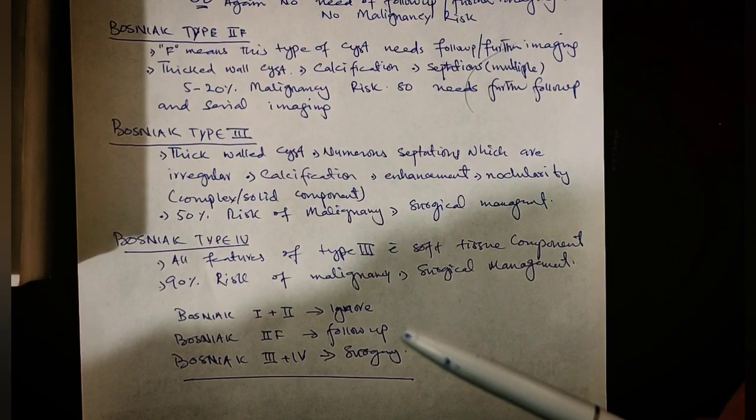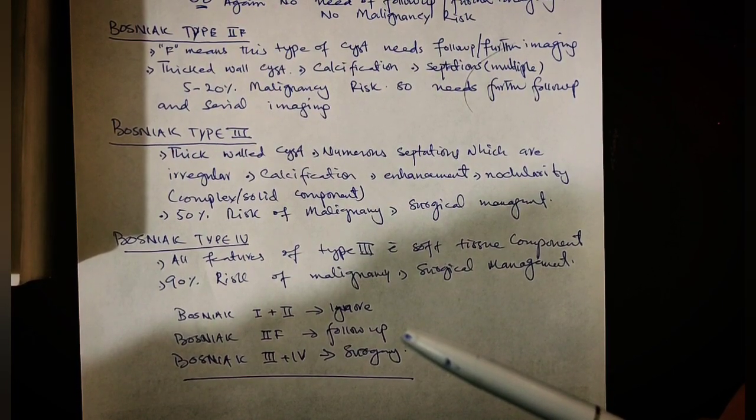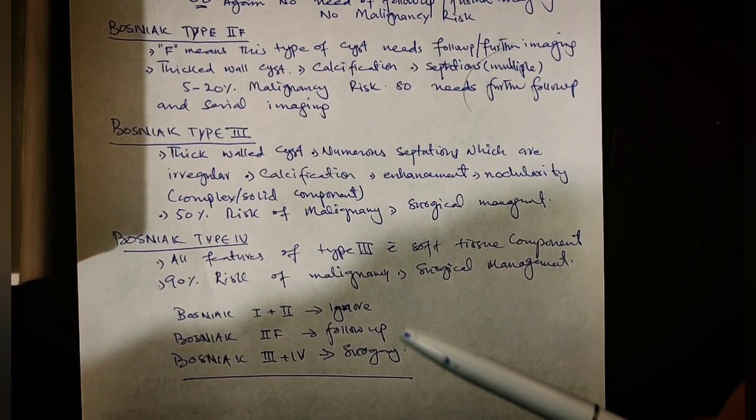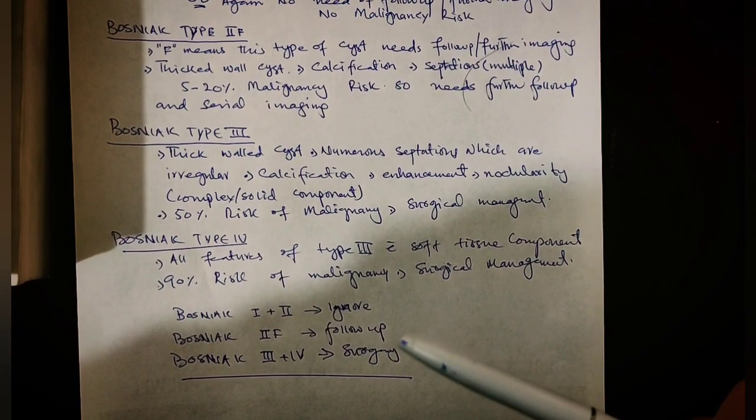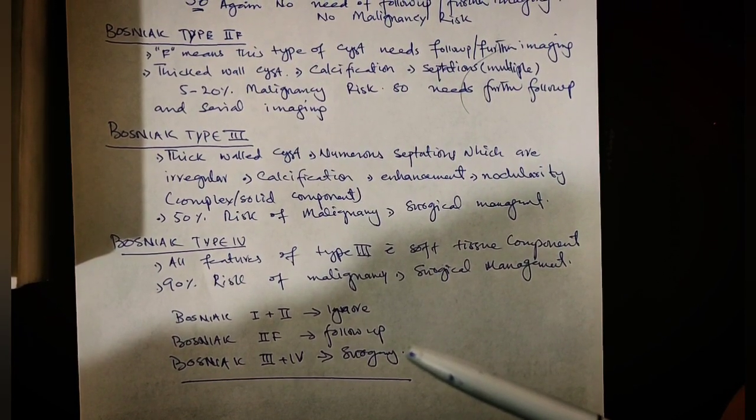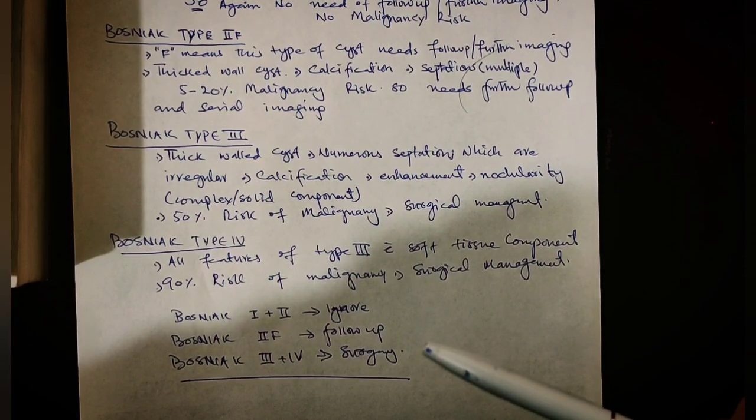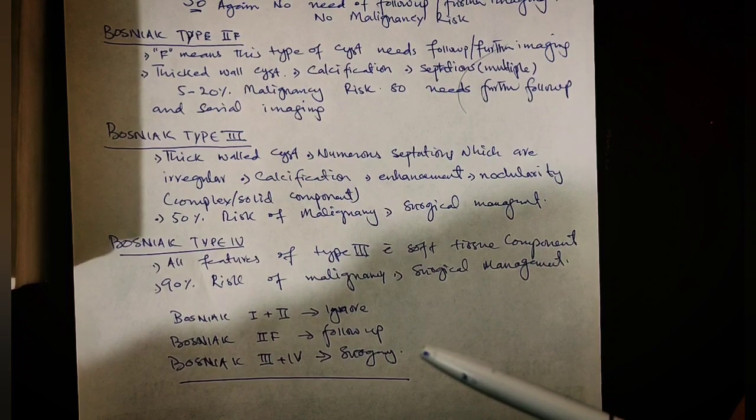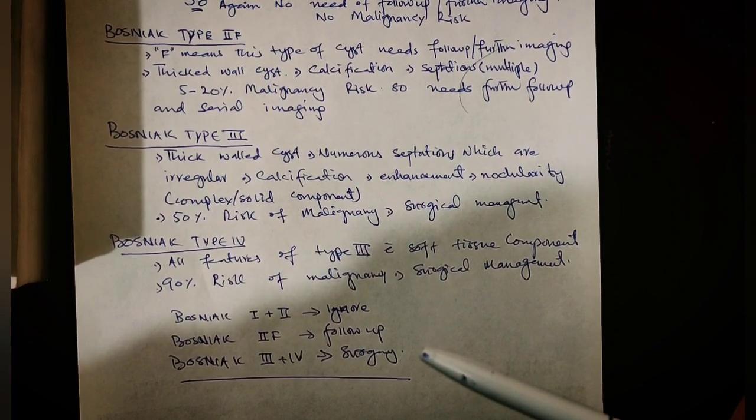Bosniak Type III or Type IV straightaway means such cyst has to be removed, or the only management is surgery. Thank you.